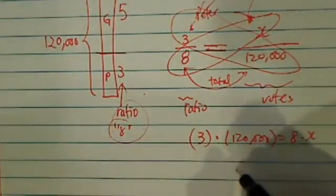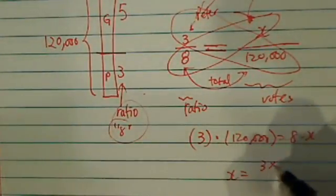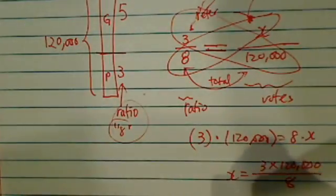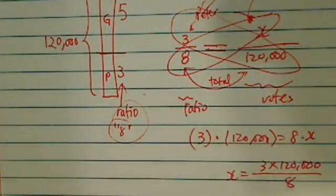From there we solve for x is equal to 3 times 120,000 divided by 8. And I believe this one is 45,000.